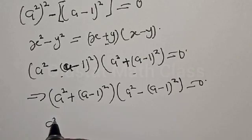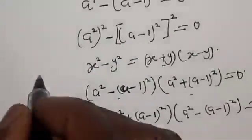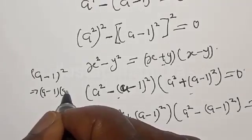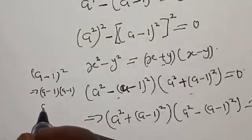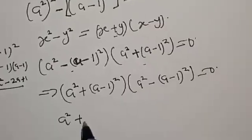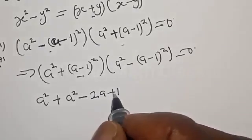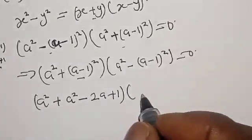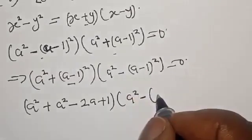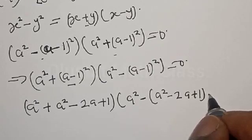Now let's expand (a-1)². We have (a-1) multiplied by (a-1): a times a gives a², then minus 2a plus 1. So (a-1)² = a² minus 2a plus 1. Bringing this into the equation, (a-1)² equals a² minus 2a plus 1.